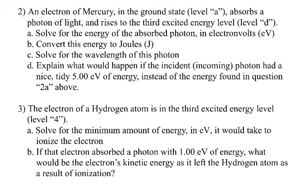Number three: an electron of hydrogen is in the third excited energy level, which we call level four. I want to know how much energy it would take to just barely ionize that electron — the minimum amount. And part B: if that electron absorbed a photon with one electron volt of energy, what would be the electron's kinetic energy as it left the hydrogen atom as a result of ionization? Alright, let's take a look at these.